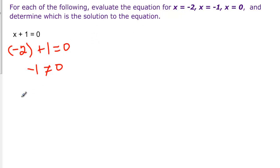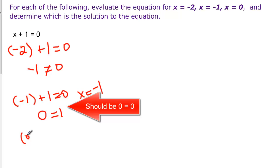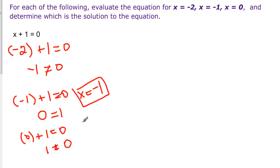If I try negative 1 in here, negative 1 plus 1 equals 0. And when I add negative 1 and 1 I get 0. So I now know that x equals negative 1 is a solution. And I need to try the last one. So 0 is in for x plus 1 and is that equal to 0? 1 is not equal to 0. So 0 is not a solution. Just negative 1.